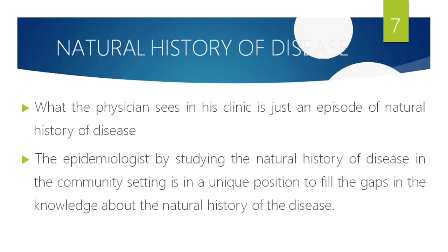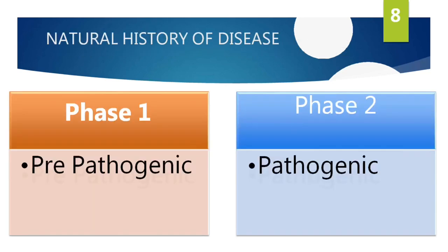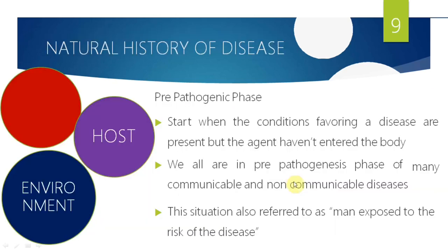The epidemiologist studies how disease starts, progresses, shows symptoms, and finishes its course — through recovery, disability, or death. Natural history is divided into two phases: pre-pathogenic and pathogenic. Pre-pathogenic is before the pathogen enters the body, when we are at risk of getting the pathogen. Pathogenic begins once the pathogen enters. During the current pandemic, we are all in the pre-pathogenic phase.